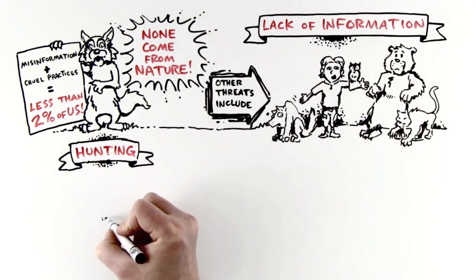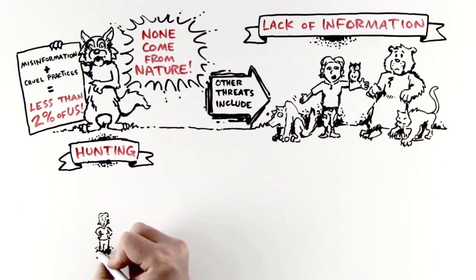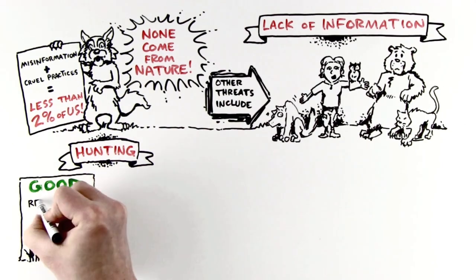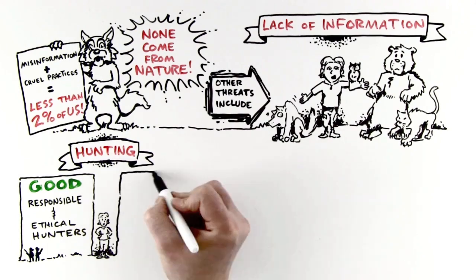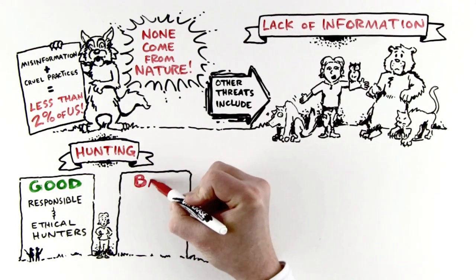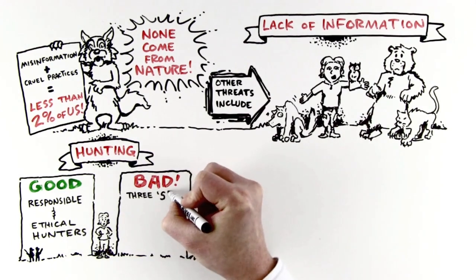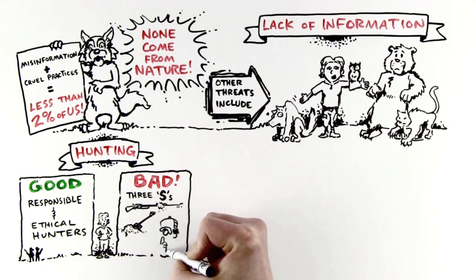Hunting: While responsible and ethical hunting can be part of an overall solution to maintaining a healthy predator-prey relationship, a small but distinct group of hunters practice the detrimental approach known as the three S's: Shoot, shovel, and shut up.